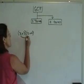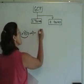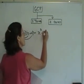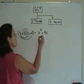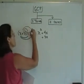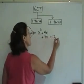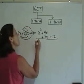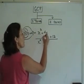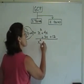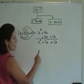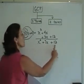Let's FOIL. I have x times x is x squared, x times 4 is 4x, 3 times x is 3x, and 3 times 4 is 12. When I combine my like terms — the inner and the outer terms — I'll have 4x plus 3x is 7x, and I'll have my last constant term of 12. Here's a trinomial.